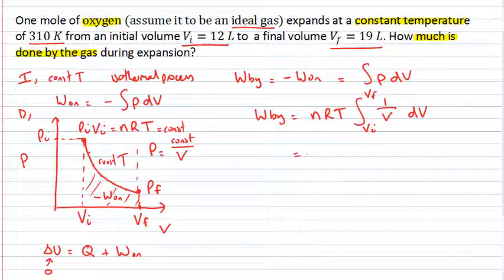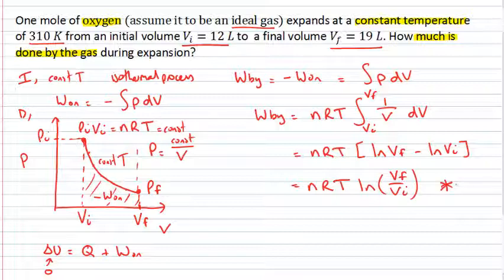So hopefully you recognize that the integral of 1 over V is going to be given by the log of the volume, and I need to evaluate that at the final volume minus the log of the initial volume. This is sometimes written as n times r times t times the log of V final divided by V initial, just using my log rules to simplify that. In fact, this is an equation that's given in your formula sheet, and hopefully you could recognize that that's the equation that I can only use for isothermal processes. So I think I've gotten exactly what I want, an expression for the work done by my gas.